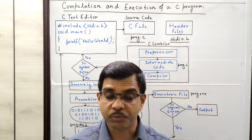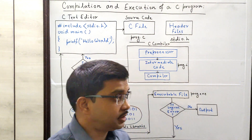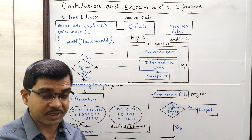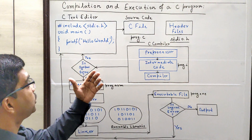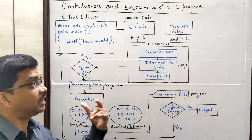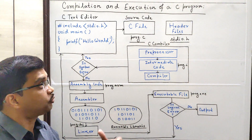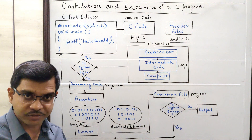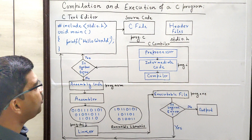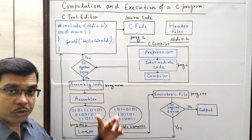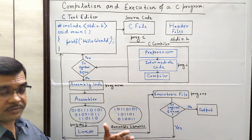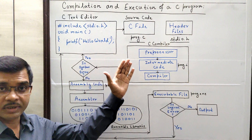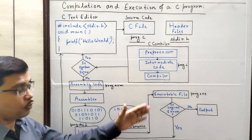Today, I am going to discuss a very important topic: after writing your first C program or any kind of C programming, how to compile and execute the C program. That means, what is the compilation and execution process of a C program? Now I am going to describe the entire process with the help of this flowchart.